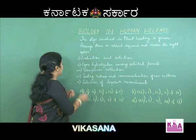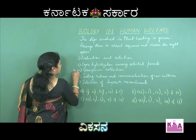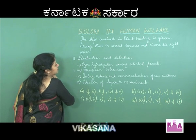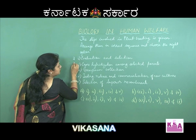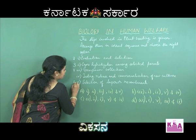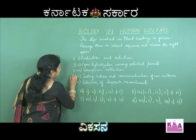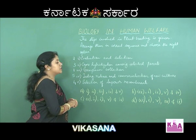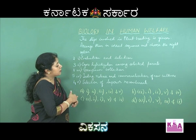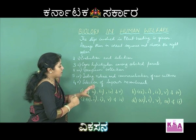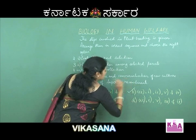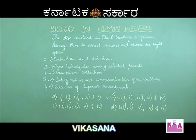So looking at the correct sequence: germplasm collection is the first step, evaluation and selection is the second, cross hybridization among selected parents is the third, selection of superior recombinants is the fourth, and testing, release and commercialization of the new cultivar is the fifth. When you look into the options, you find that particular sequence in option B. So option B is the right answer.